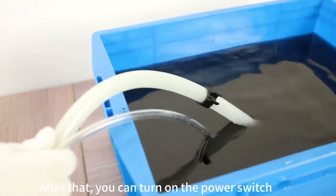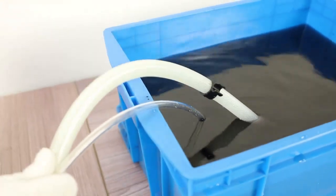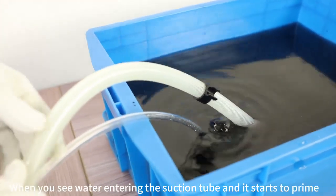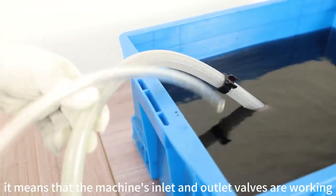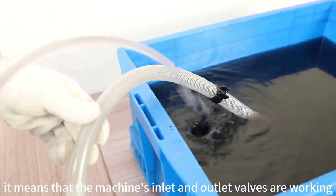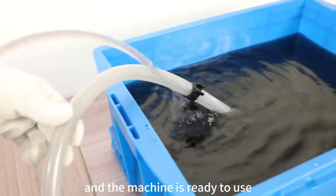After that, you can turn on the power switch. When you see water entering the suction tube and it starts to prime, it means that the machine's inlet and outlet valves are working, and the machine is ready to use.